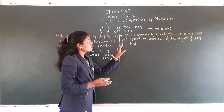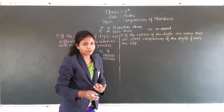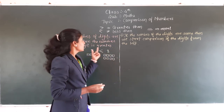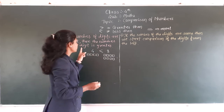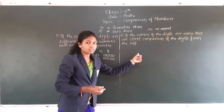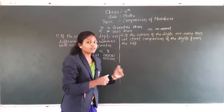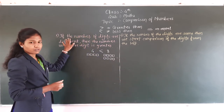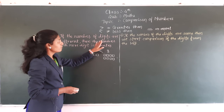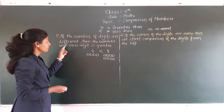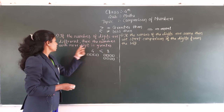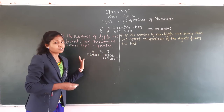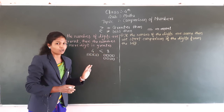Now, whenever we solve the comparison of numbers, we should know some rules. यहाँ आपको दो rules हैं. The first rule is: if the number of digits are different, then the number with more digits is greater. This is the first basic rule of comparison of numbers.